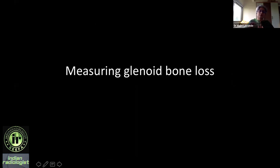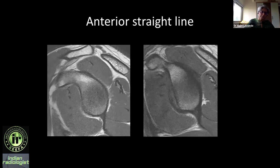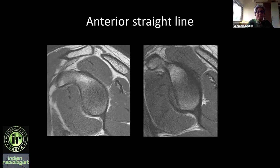The most important question the orthopedic surgeon wants answered is: what is the glenoid bone loss — and is it significant? There are many methods in the literature. Looking at the en-face glenoid view: normal glenoid is pear-shaped, and if you see straightening of the anterior margin, that immediately tells you there is bone loss. Now you need to quantify it.